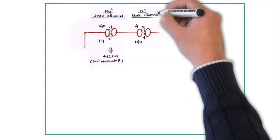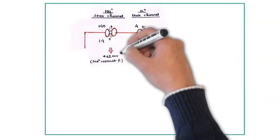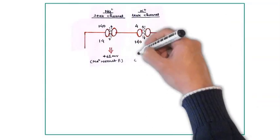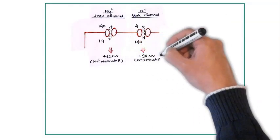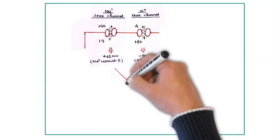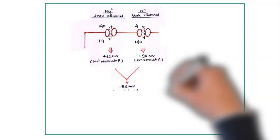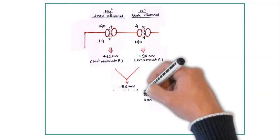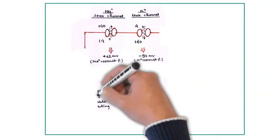Next mechanism is the most important mechanism, that is potassium leak channel. This mechanism tries to bring RMP towards potassium Nernst potential, that is minus 94 millivolt, and potassium permeability is 100 times more than sodium under resting condition, so its contribution is most.